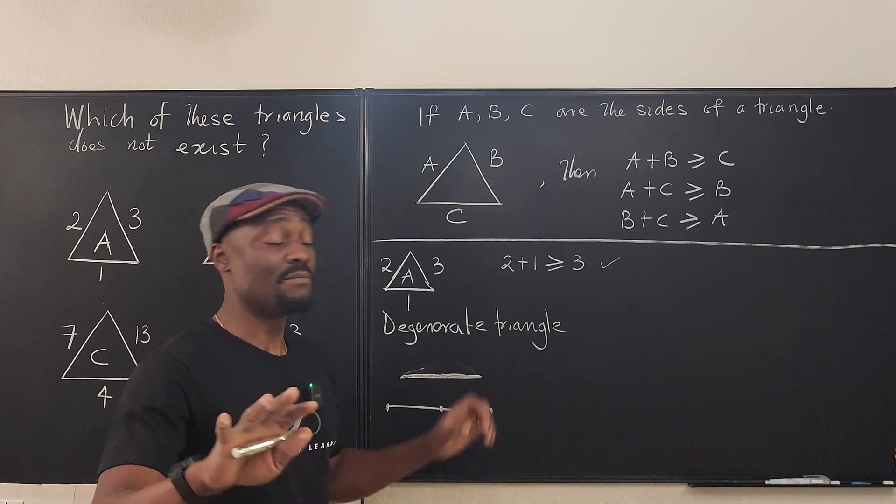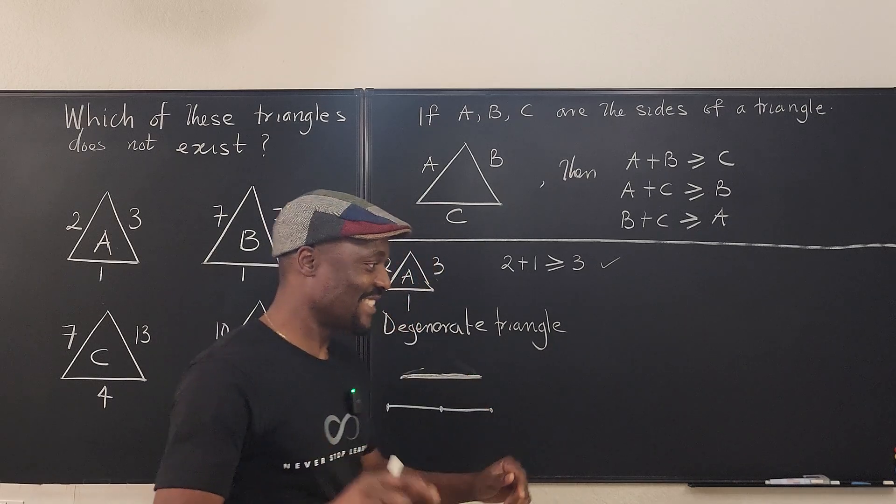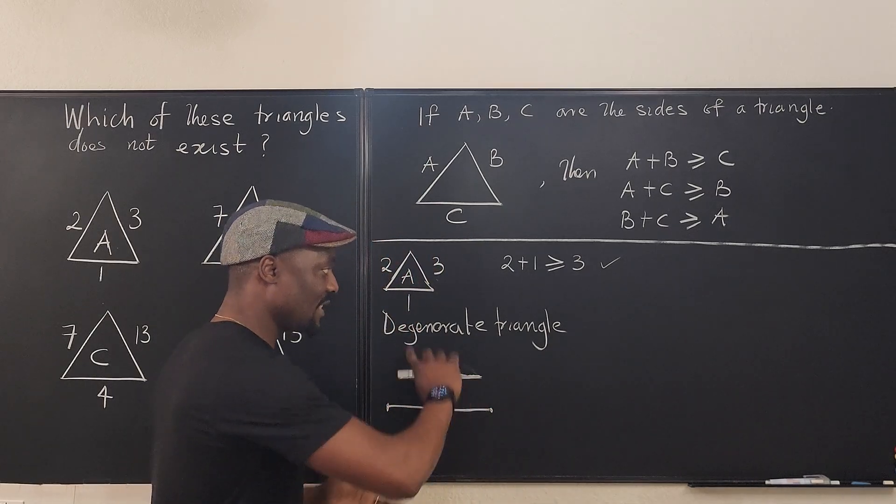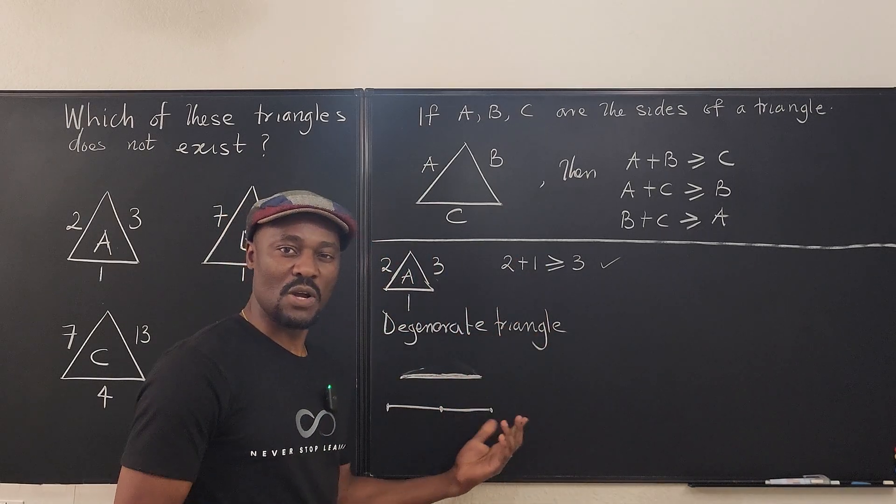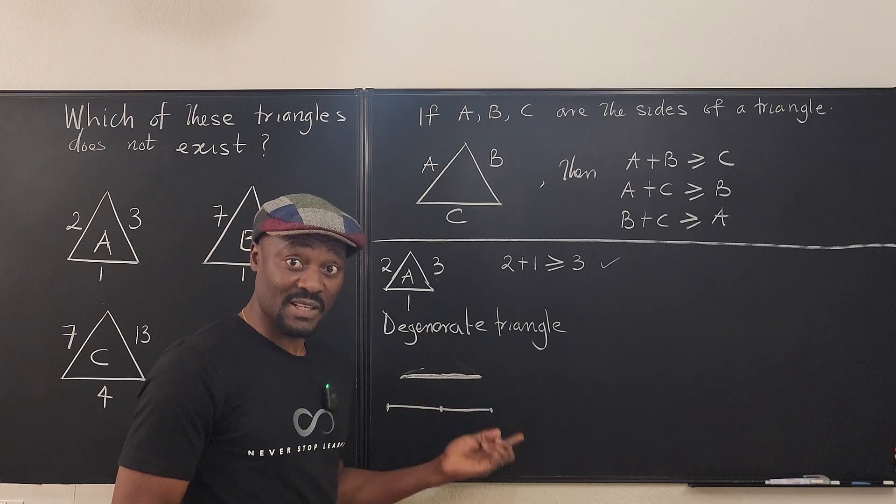That's the same thing about degenerate triangles. When I'm saying matrix, I'm talking about a square matrix. So this is a degenerate triangle. And this is the most controversial part of it. This is still a triangle.